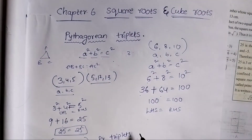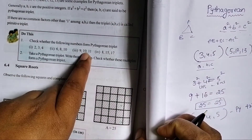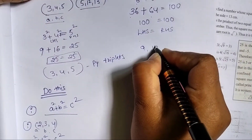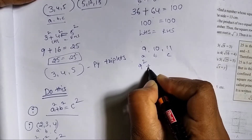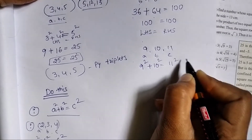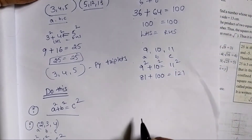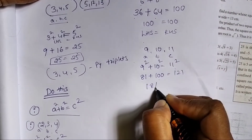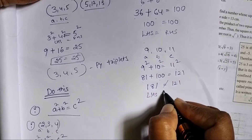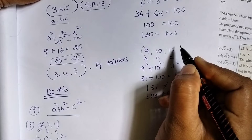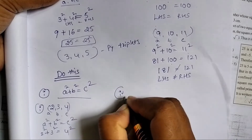Next question: 9, 10, 11. A square means 9 square plus 10 square is equal to 11 square. 9 square means 81, plus 10 square means 100, equals 181. 11 square means 121. So 181 is not equal to 121. LHS is not equal to RHS. These three numbers are not Pythagorean triplets.